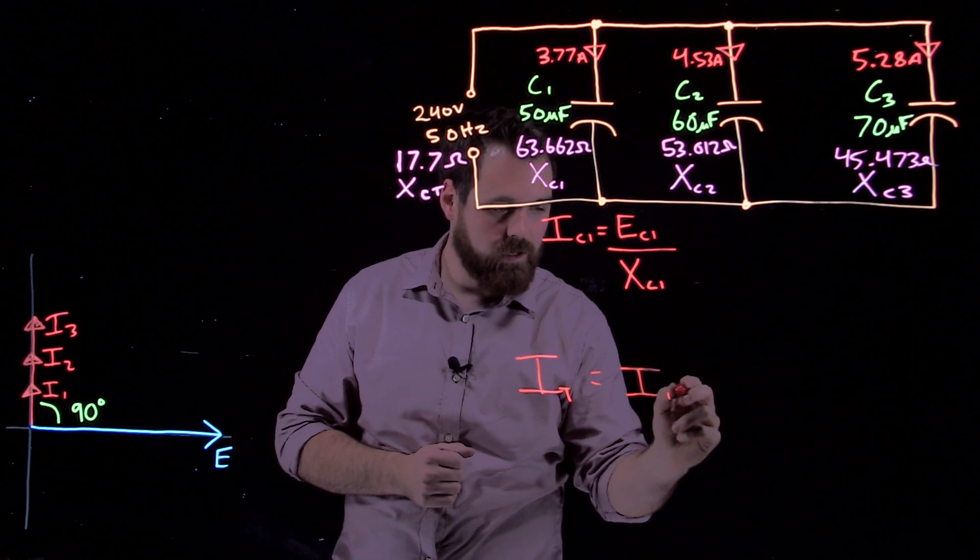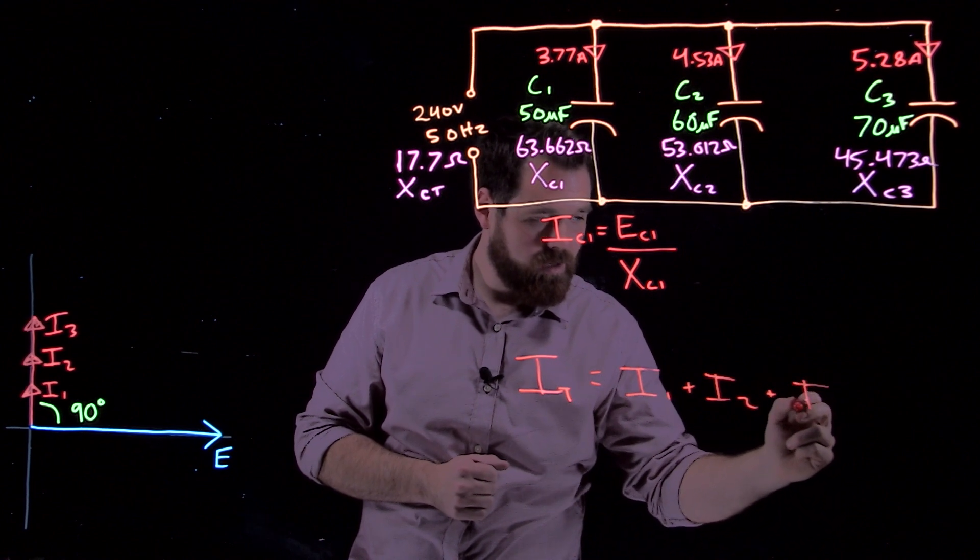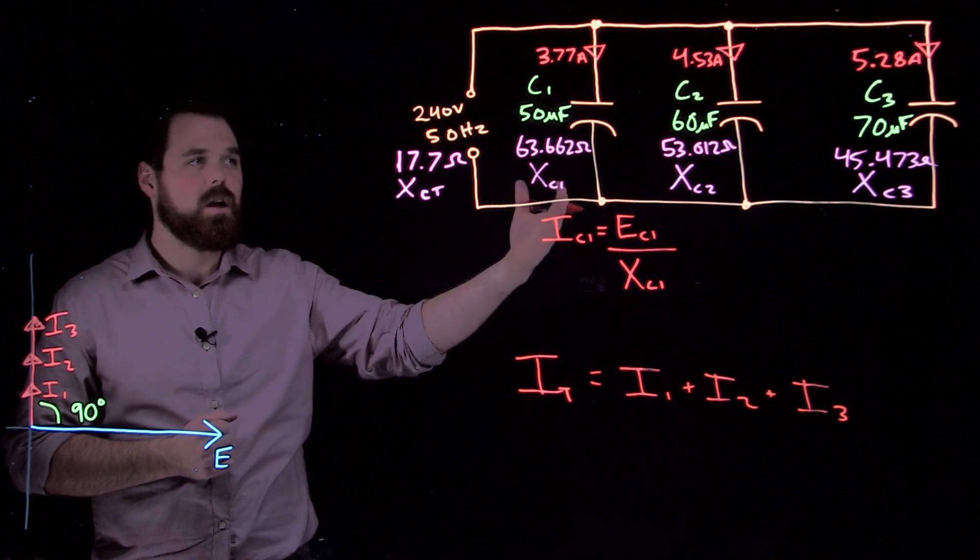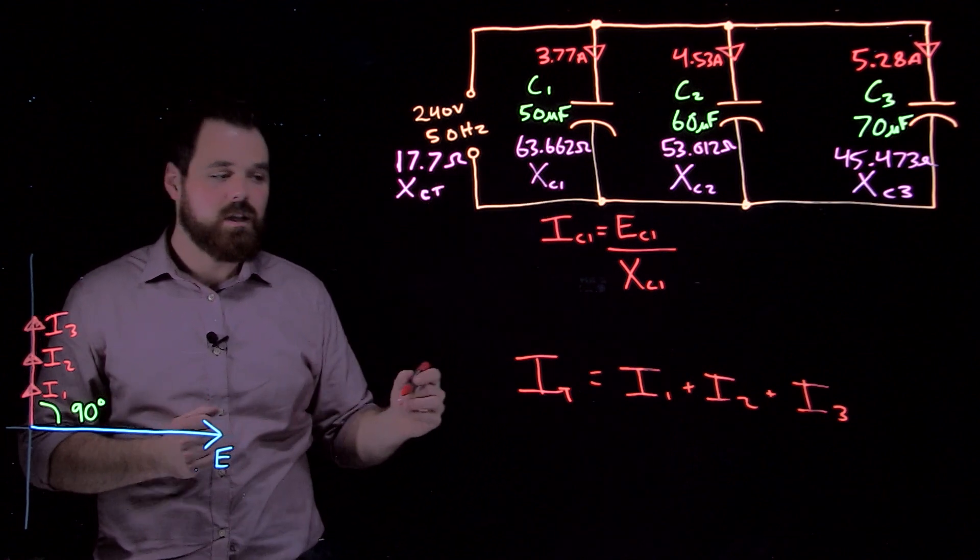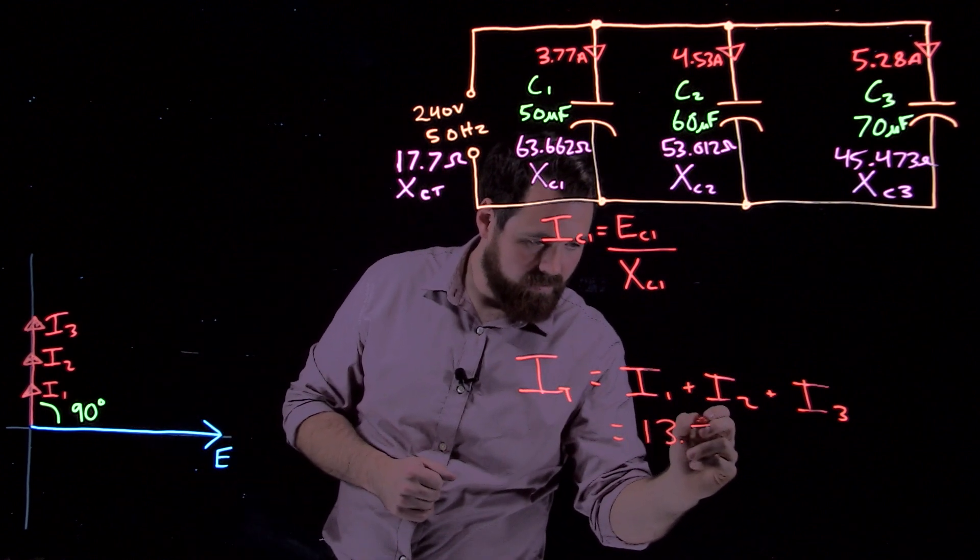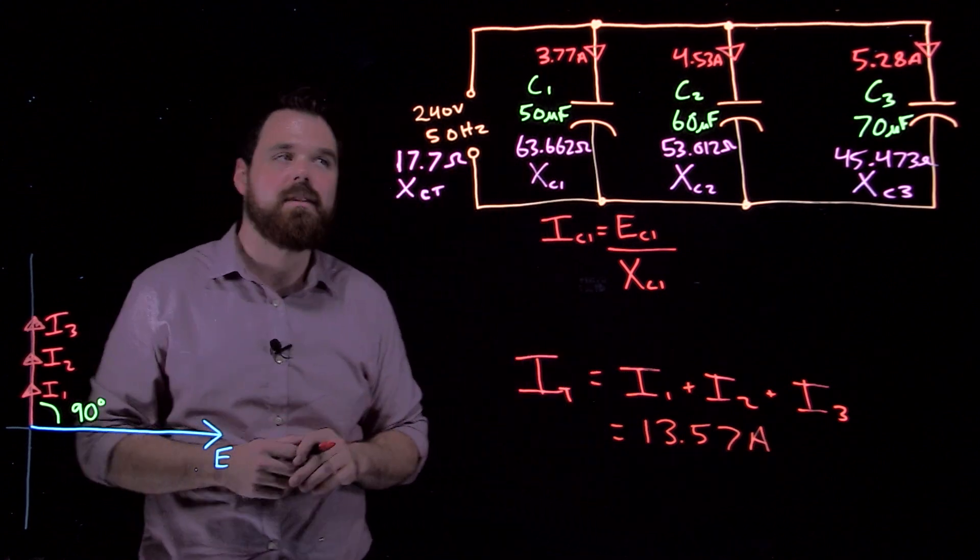So we get IT equals I1 plus I2 plus I3. So we do the math, 3.77 plus 4.53 plus 5.28, gives us an IT of 13.57 amps. There could be a little rounding difference in there.